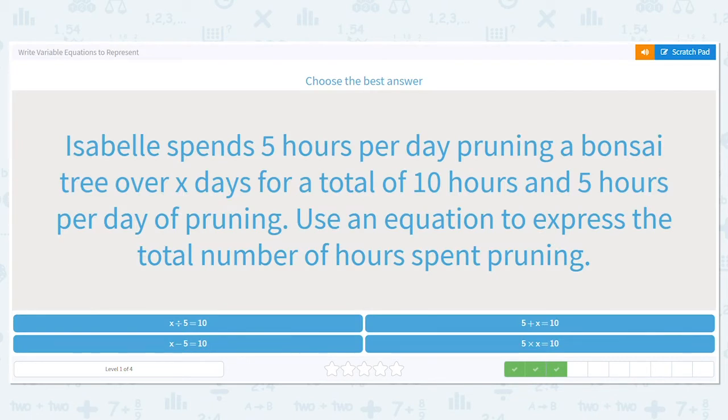Isabelle spends five hours per day pruning a bonsai tree over x days for a total of 10 hours and five hours per day of pruning. Use an equation to express the total number of hours spent pruning.